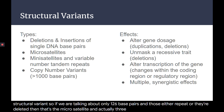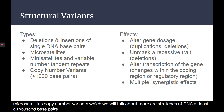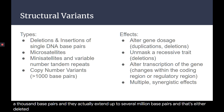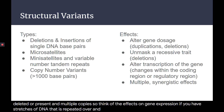Actually, 3% of our genome are microsatellites. Copy number variants, which we will talk about more, are stretches of DNA at least 1,000 base pairs, and they actually extend up to several million base pairs — either deleted or present in multiple copies. Think of the effects on gene expression if you have stretches of DNA that are repeated over and over.